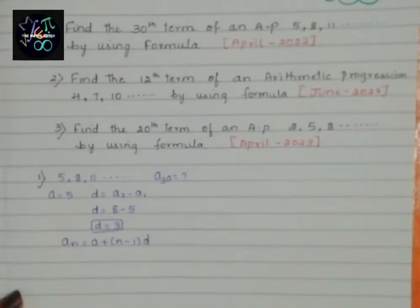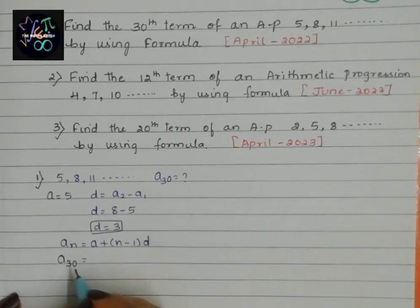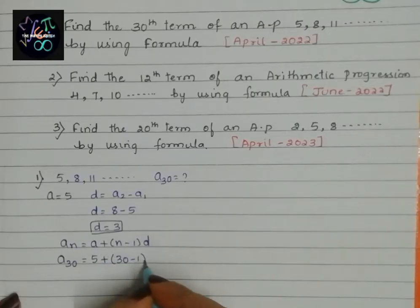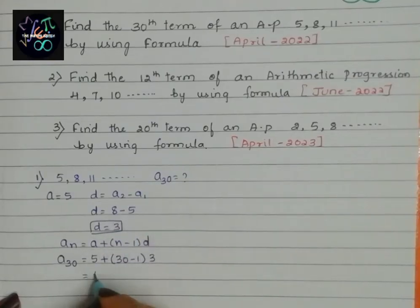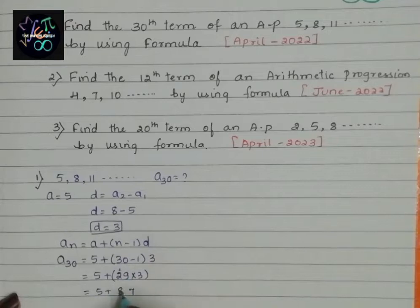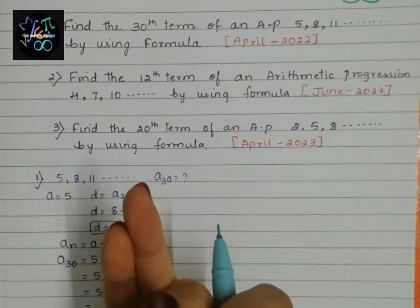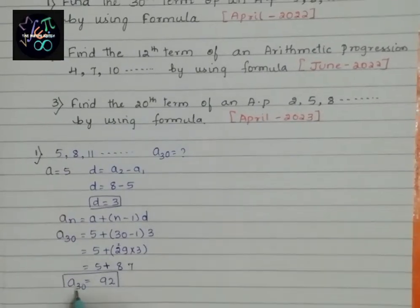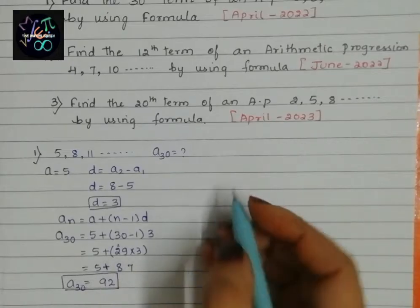To find A30: A value is 5 plus (30 minus 1) times 3, which is 5 plus 29 into 3. 29 times 3 is 87, so 87 plus 5 equals 92. Therefore, the 30th term is 92. This is the solution for the first question.